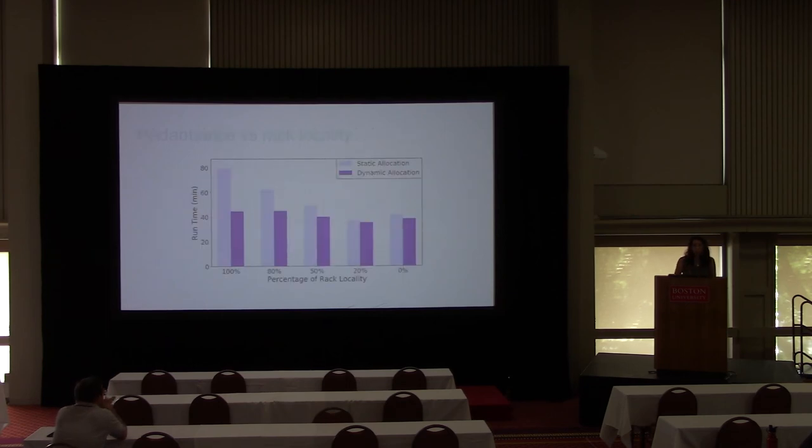We also used the Facebook trace with different locality levels. The Facebook trace actually doesn't have any rack locality, but we synthetically generated it. 100% means all the requests are rack local, versus 0% means requests are randomly distributed among different racks. For all the cases, we observed that dynamic allocation outperformed the static allocation.